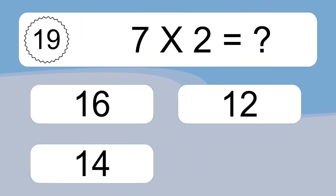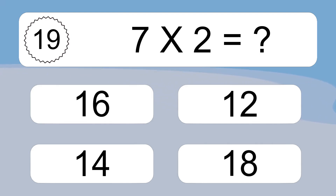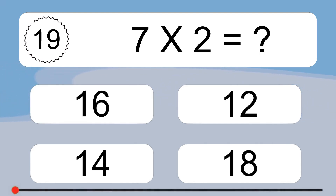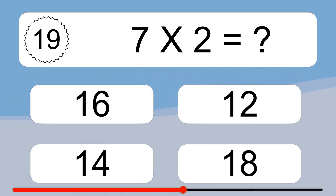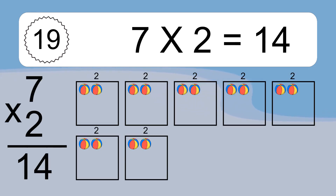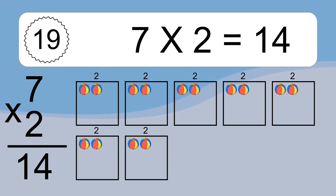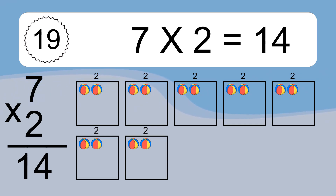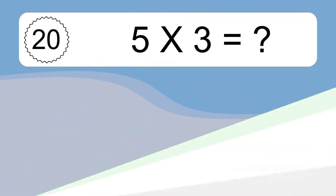Seven times two equals what? Seven times two equals fourteen. We have seven boxes, and each box has two colorful balls inside. If you count all the balls in all the boxes together, you will have seven times two balls. This equals fourteen balls.